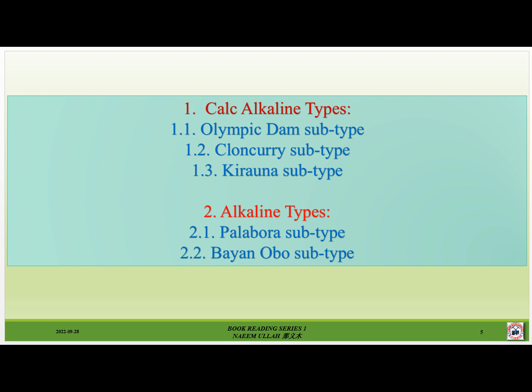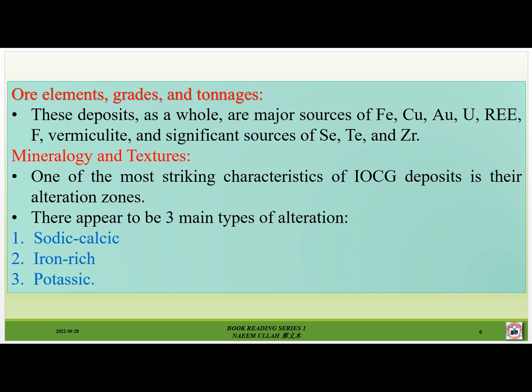Number one, calc-alkaline types: 1.1 Olympic Dam subtype, 1.2 Cloncurry subtype, and 1.3 Corona subtype. Number two, alkaline types: 2.1 Alborz subtype, 2.2 Bayan Obo subtype. As a whole, these deposits are major sources of iron, copper, gold, uranium, rare earth elements, fluorine, and vermiculite, and significant sources of scandium, titanium, and zirconium.